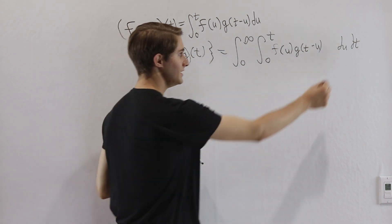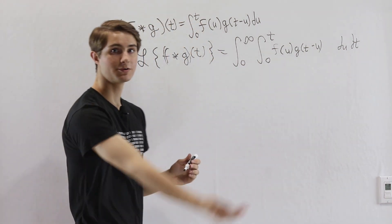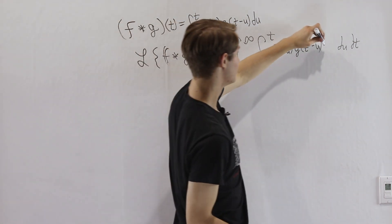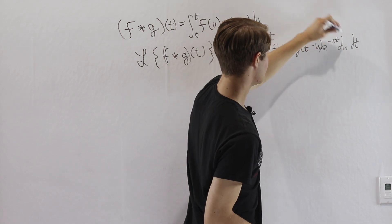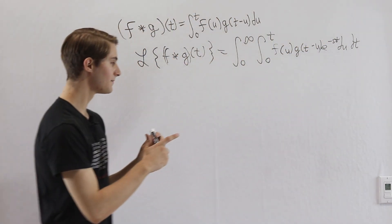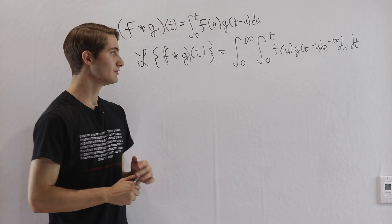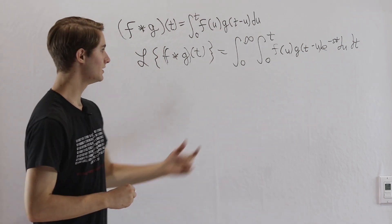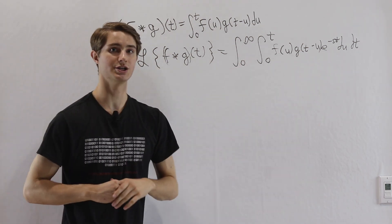Normally we would put the e to the negative st out here, but I'm going to bring it inside of the second integral. What we want to do to evaluate this double integral is to switch the order of integration.